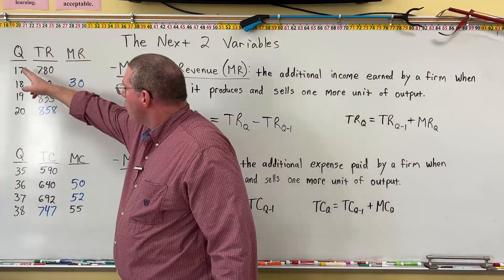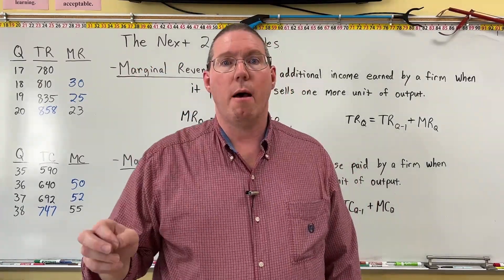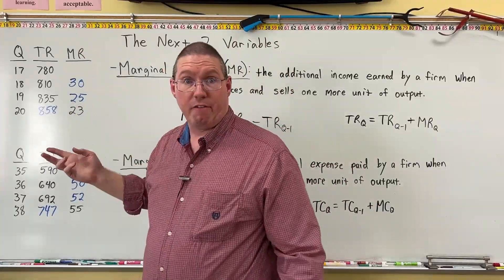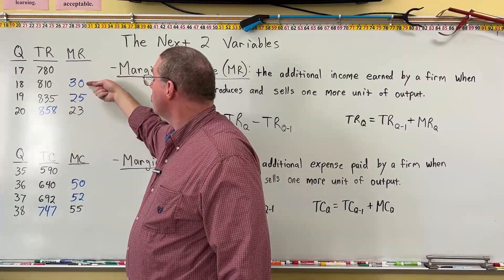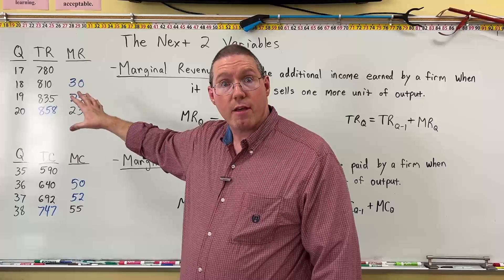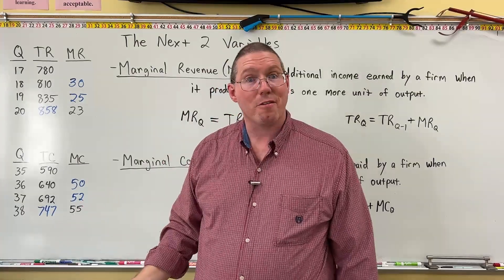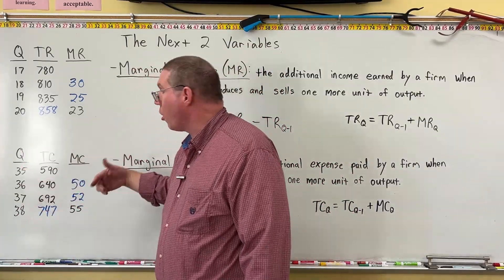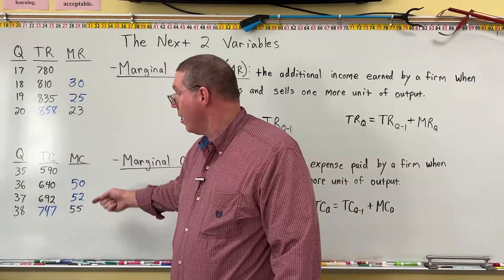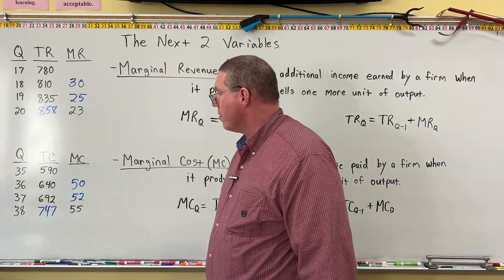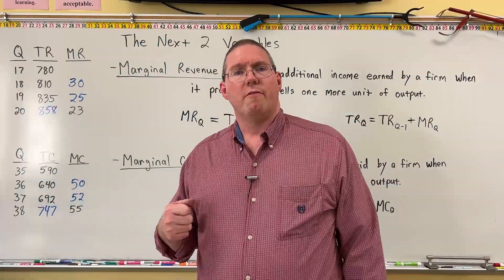Notice that as quantity goes up, marginal revenue is getting smaller and smaller. That's because of the law of diminishing marginal benefit. Revenue is a benefit, and marginal revenue is a marginal benefit. As quantity increases, marginal benefit will diminish under fixed circumstances. Similarly, marginal cost is an opportunity cost. As quantity increases, our opportunity cost increases because of the law of increasing opportunity cost — so marginal cost keeps going up.